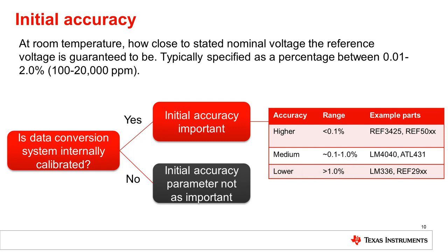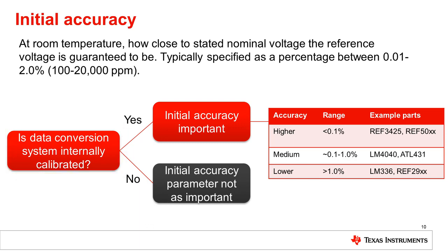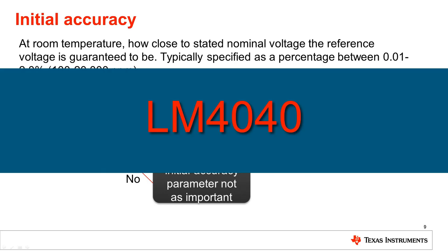Note that the importance of initial accuracy depends mainly on whether or not the data acquisition is calibrated, as a calibrated system can compensate for the error introduced due to initial accuracy. Let's look at an example of this specification for the LM4040.